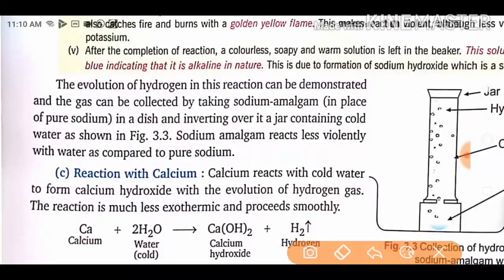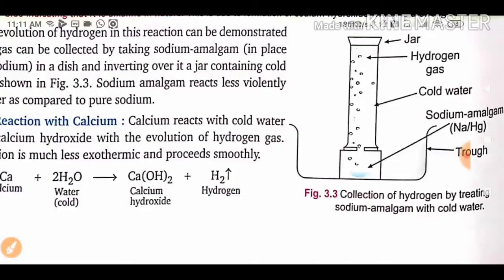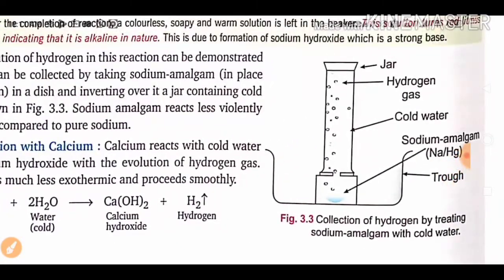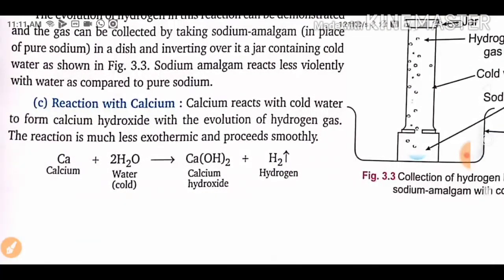The evolution of hydrogen in this reaction can be demonstrated by collecting the gas using sodium amalgam (Na/Hg) in place of pure sodium, placed in a dish inverted over a jar containing water, as shown in Figure 3.3. Sodium amalgam contains mercury as well as sodium, hence it is called sodium amalgam.